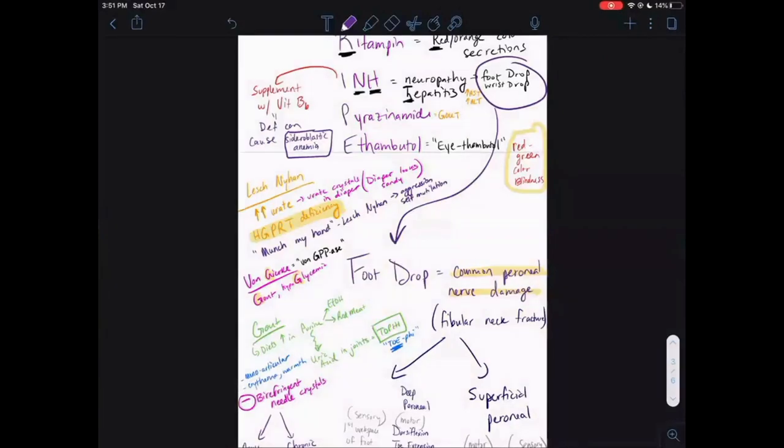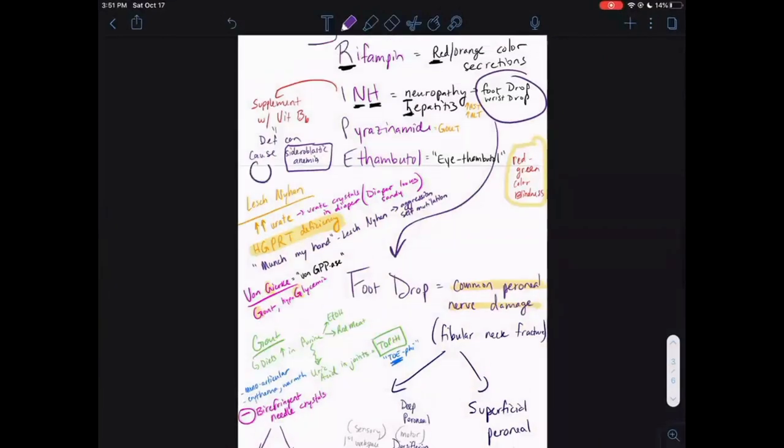Let's just go back to our drawing here. Sideroblastic anemia, here's your cells. You're going to have the nucleus, and you have a ring of iron around it, basically. You impair your heme synthesis. And remember, the gene that can get messed up that can also cause sideroblastic anemia is ALAS, A-L-A synthase. ALAS deficiency can also cause sideroblastic anemia.